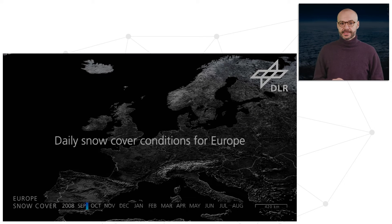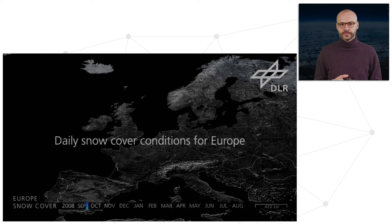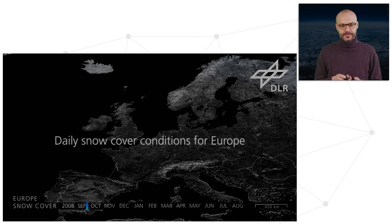Meteorological data is an important aspect of remote sensing. In this case, we see snow cover in Europe through time. This has been generated by the German Aerospace Center, also called DLR. In this slide, we see areas that are permanently snow-covered, or we can appreciate the mean snow cover per year, allowing studies of the presence of snow.